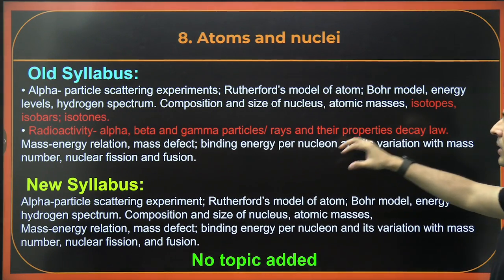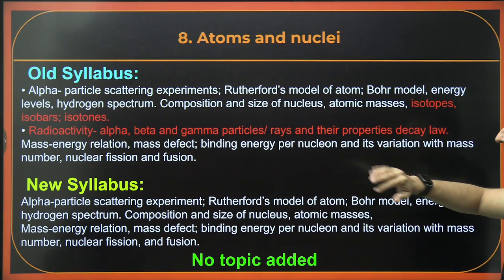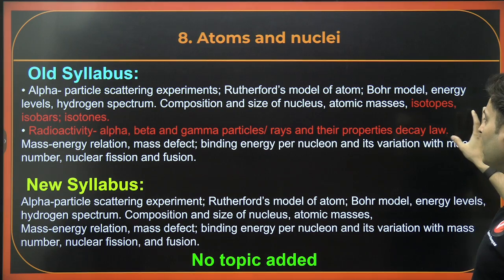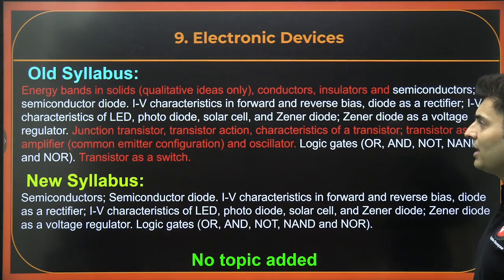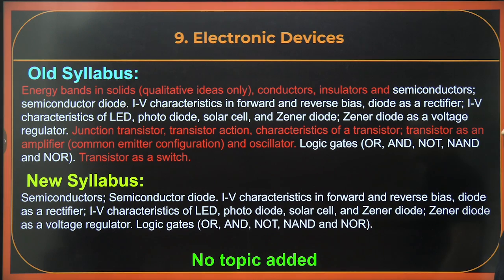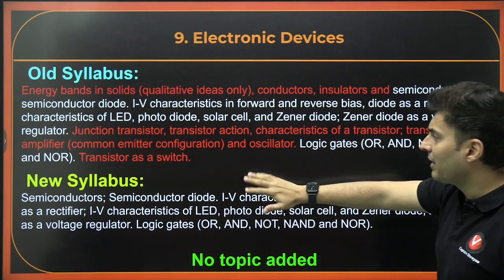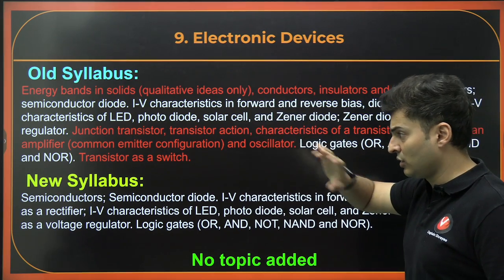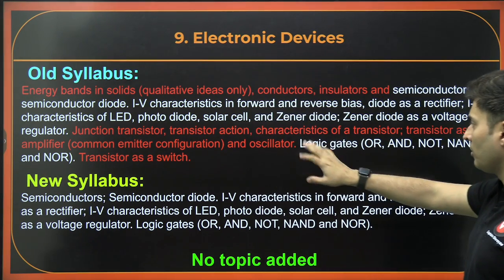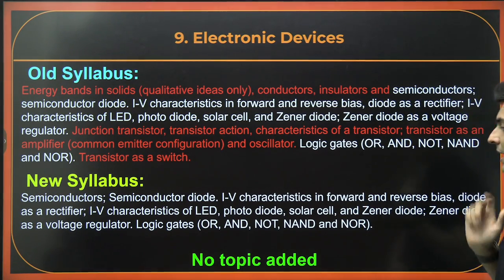In Atoms and Nuclei, isotopes, isobars, and isotones have been removed. The radioactivity part and decay laws have been completely removed. Nothing new has been added. In Electronic Devices, energy bands have been removed. Conductors and insulators and related topics have been removed. Junction transistors and the application of transistors, transistor switch — everything has been removed. Logic gates is still there. No new topic has been additionally added.